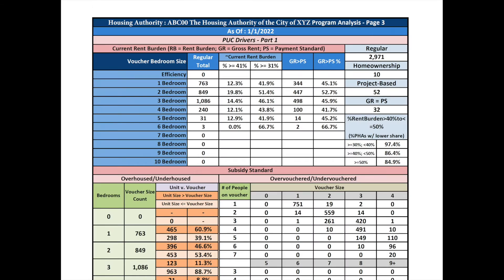The third page is mostly related to Payment Standards, Subsidy Standards, and Rent Burden. The top table allows the PHA to see current rent burden and payment standards by voucher size, which may help in identifying needed changes to the payment standard. The lower table helps a PHA assess subsidy standards via families choosing to overhouse themselves. The darker shaded orange indicates overhousing when a unit size is larger than the voucher, while the lighter shade indicates a matching voucher to unit size. In this example, 53% of families with a two-bedroom voucher are in a two-bedroom unit, whereas nearly 47% are in a three-bedroom unit or larger, which may indicate a need to adjust subsidy standards.